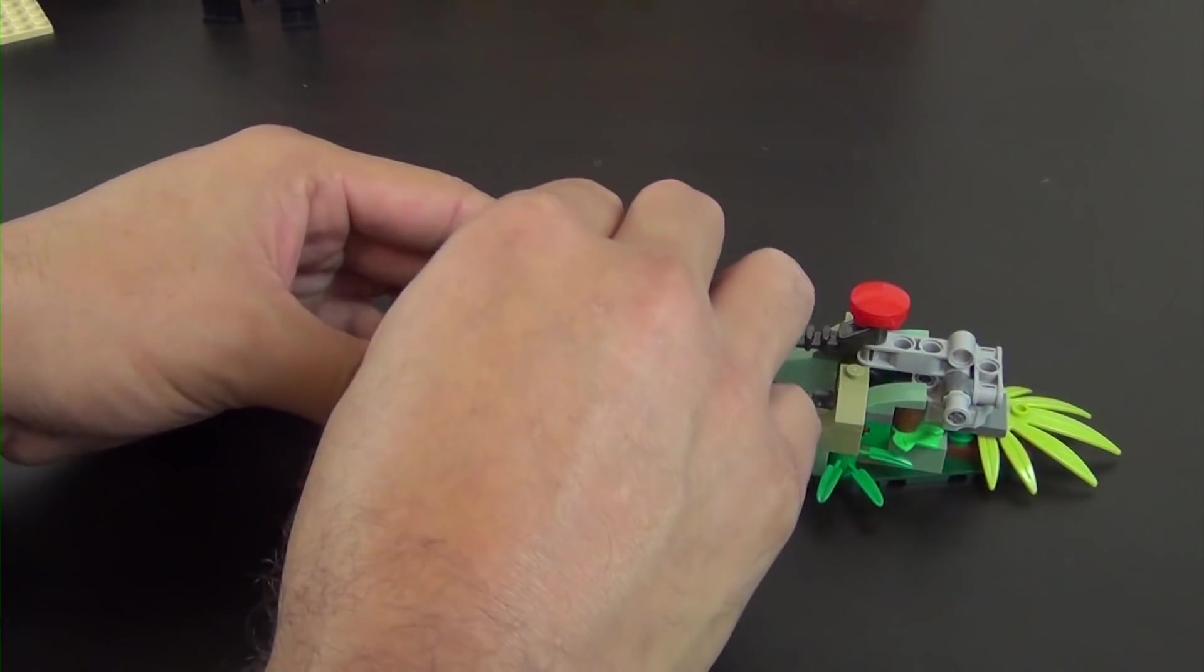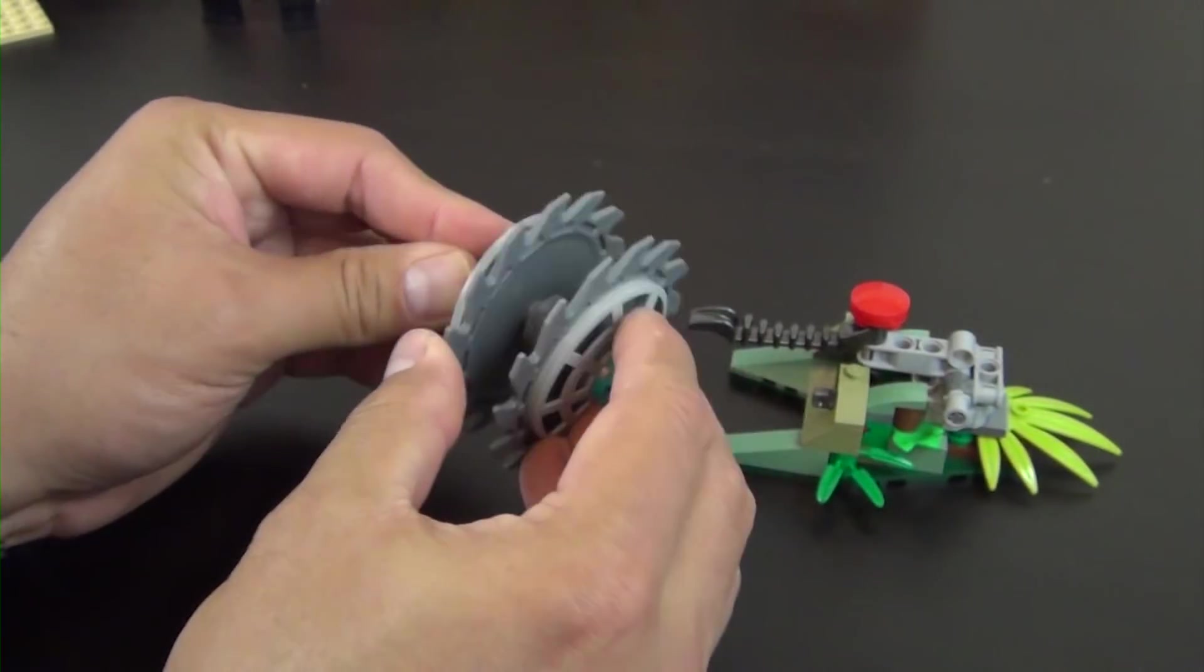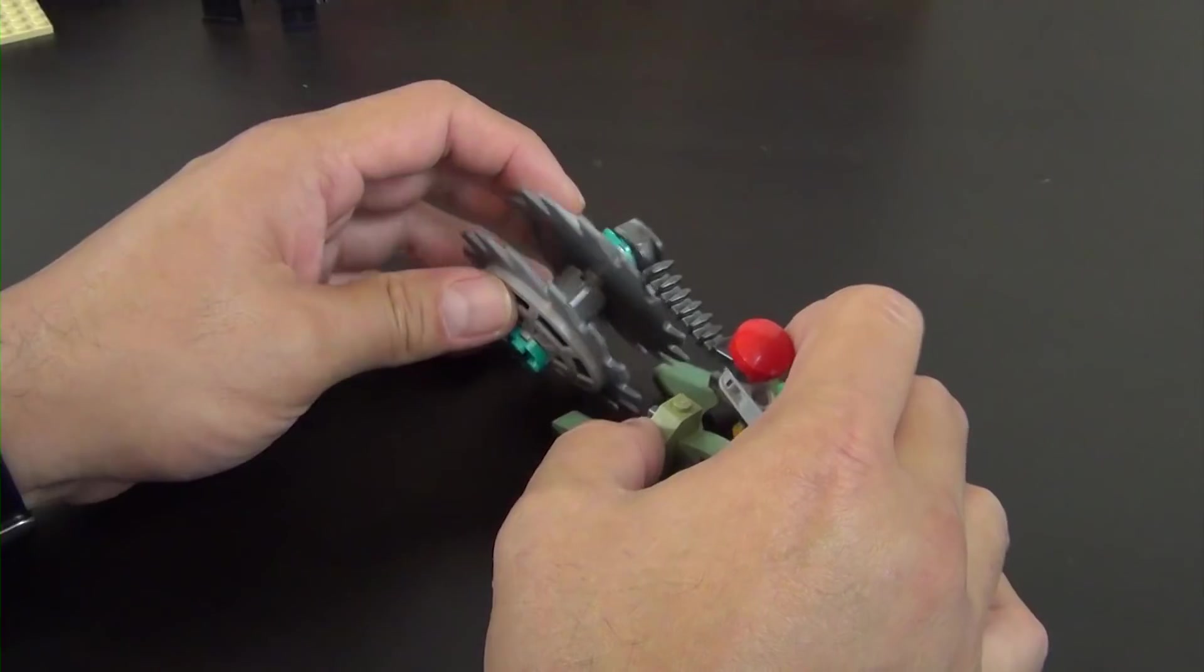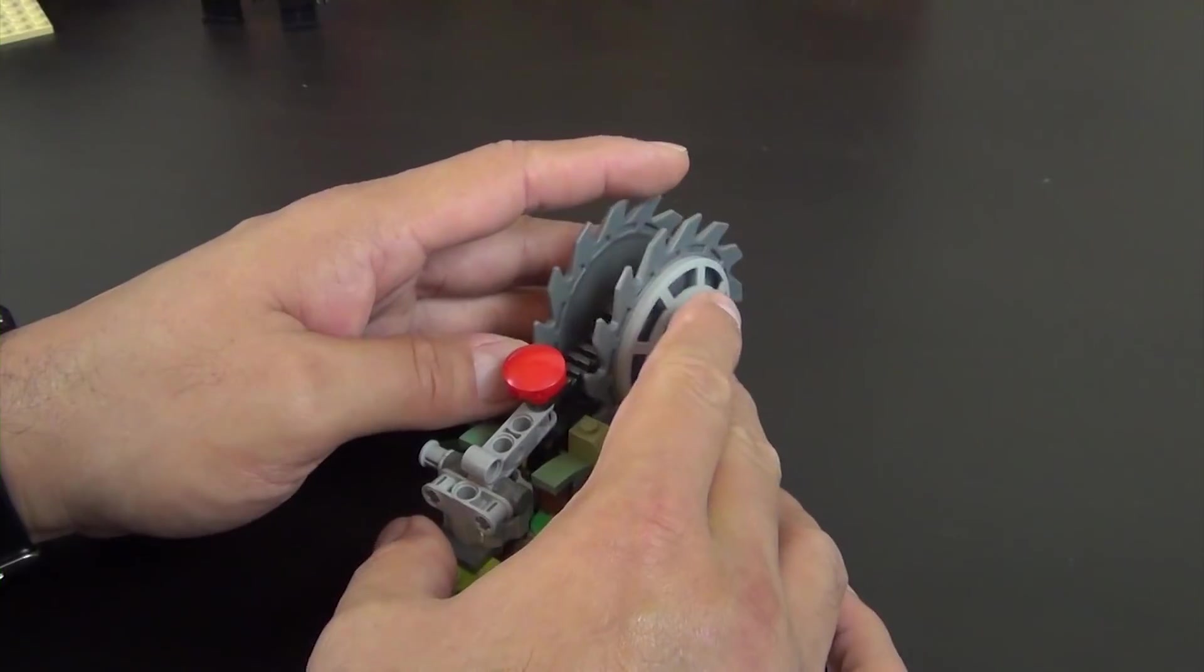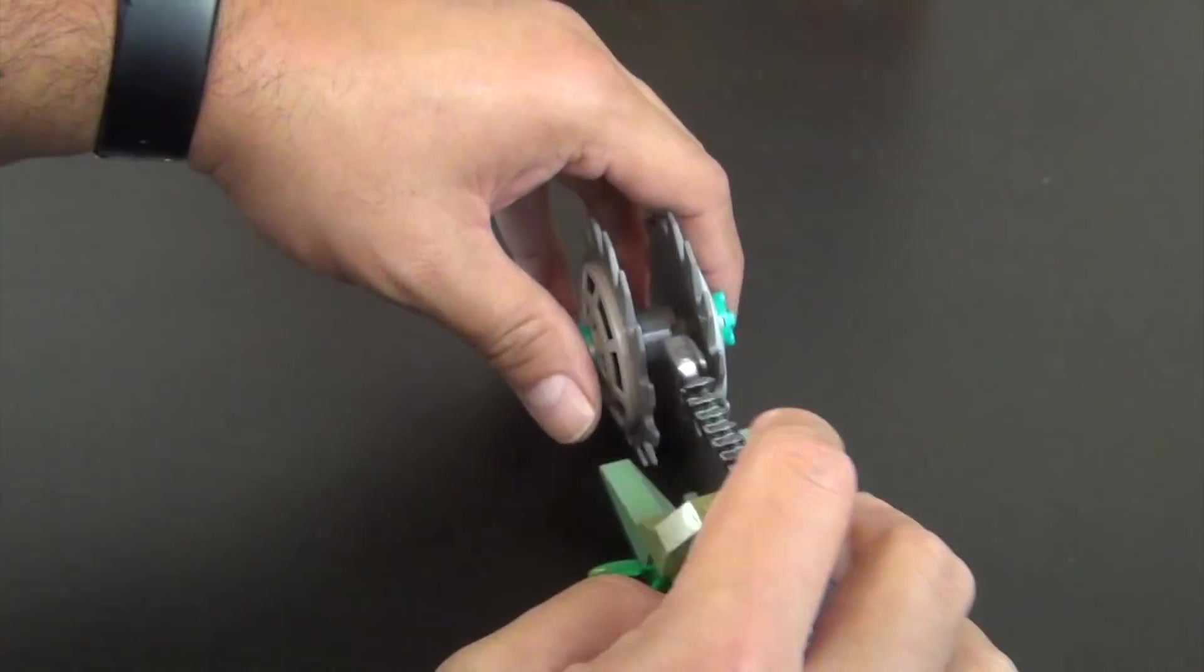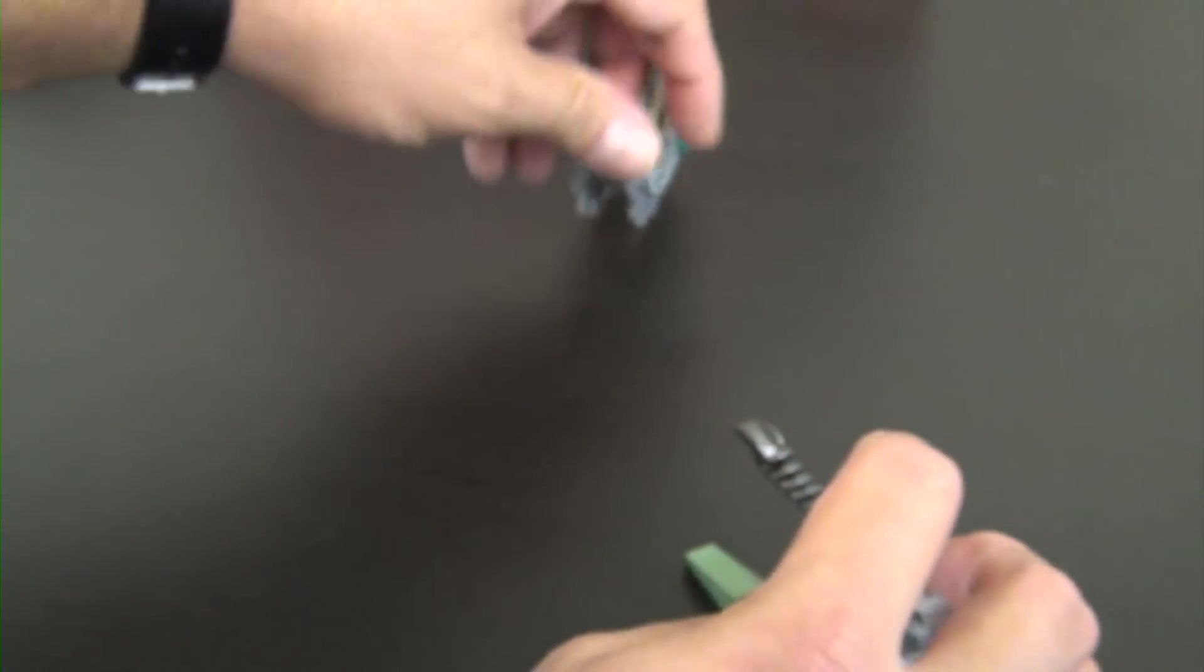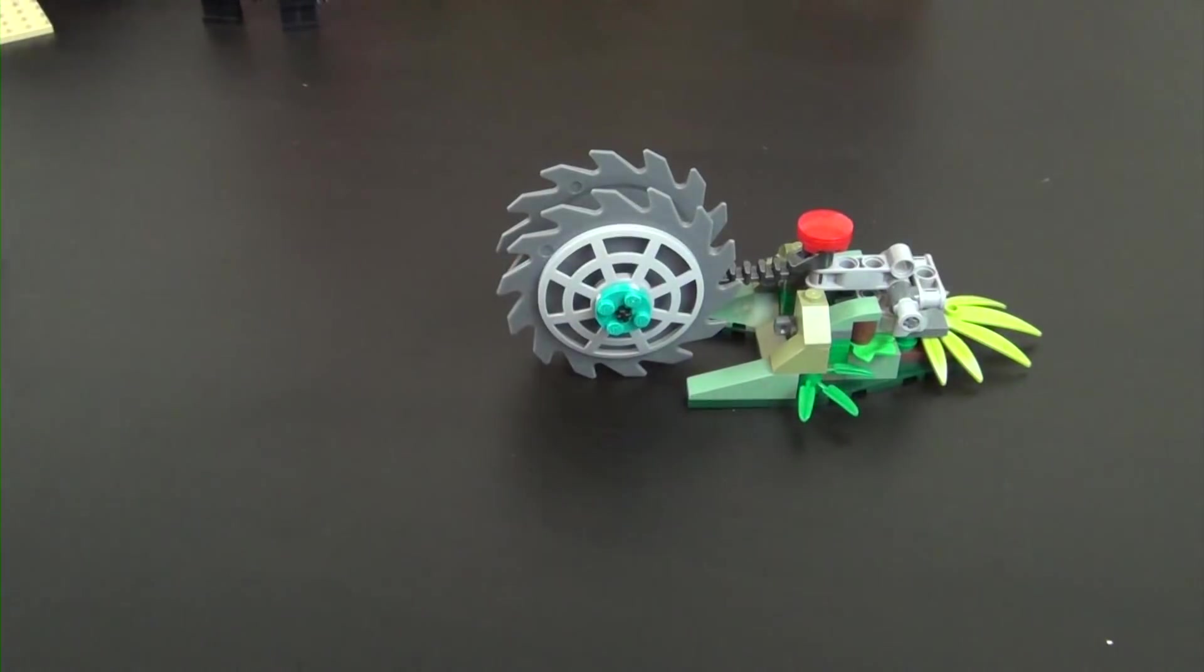Two more pieces here. All right, so this thing looks like it goes in just like that, just kind of sets in there. You push down on it and it shoots it out. It doesn't really roll too well. Let me see if I can get it rolling. Yeah, a little bit. So kind of a gimmick play feature, but I can see the idea behind it.